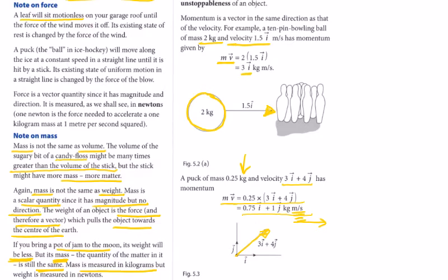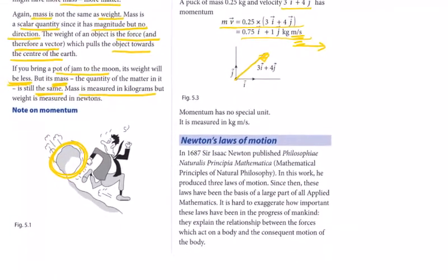Momentum has no special unit. It's measured in kilograms meters per second. A new introduction here: it's all the way back in 1687 that Isaac Newton published Philosophiæ Naturalis Principia Mathematica, or Mathematical Principles of Natural Philosophy. In this work, he produced three laws of motion.